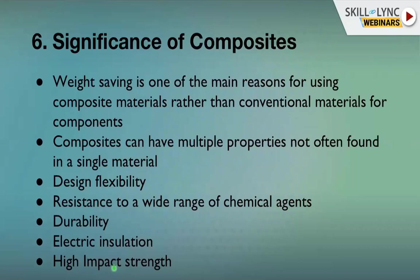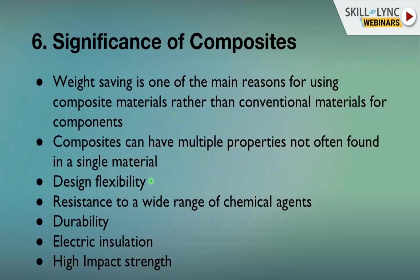Composites offer significant advantages: weight saving is the primary reason for using composite materials over conventional materials. Composites can have multiple properties not found in a single material — offering design flexibility. For example, aircraft wings made from composites can achieve swept configurations, whereas all-metallic wings are very flat.